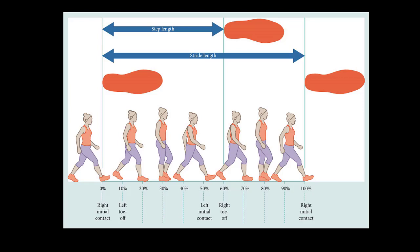A stride is actually the initial contact of one foot to the initial contact of that same foot. In my figure here, we have initial contact of the right foot to initial contact of the right foot again, indicating a stride. And the physical distance between those two initial contacts is the stride length.